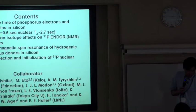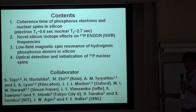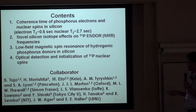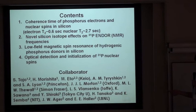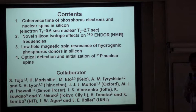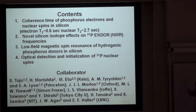I'm Kohei Ito from KU University. Today I will be talking about three things plus one if I have time. First, I'm going to talk about coherence time of phosphorus electrons and nuclear spins in silicon. We have obtained close to one second T2 of electron coherence and also close to three seconds of nuclear spin coherence in silicon. Then I will talk about a novel silicon isotope effect on phosphorus NMR, and also electrically detected electromagnetic resonance.